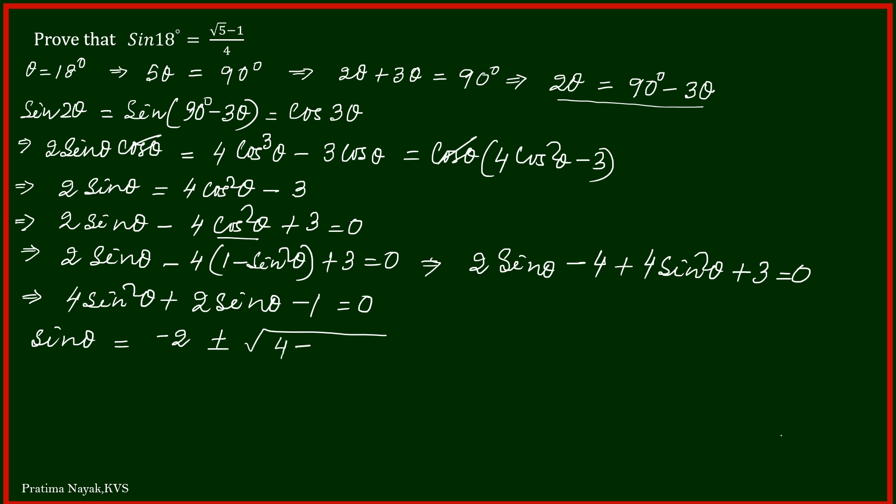Here a is 4, b is 2, and c is minus 1. So this gives us minus 2 plus minus square root of 4 plus 16, over 8. This gives us minus 2 plus minus 2 root 5, over 8.